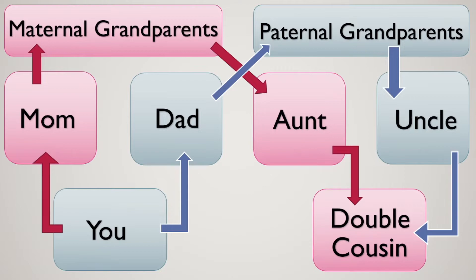We then go down from your paternal grandparents to your uncle, who is of course the father of your cousin, making your cousin a double cousin. This chart has been completely simplified — I've made the mum and the aunt sisters, the dad and the uncle brothers, and everyone is full siblings to each other. In reality your parents and your uncle or aunt could be half siblings, so there are lots of factors involved.